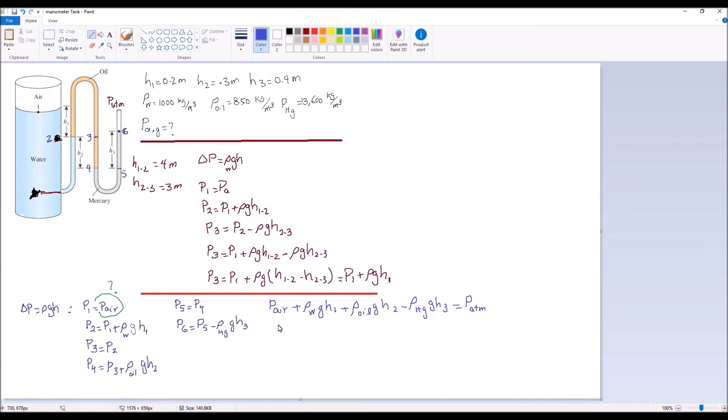So since we want to calculate the gauge pressure of air, P air minus the atmosphere is P air gauge.